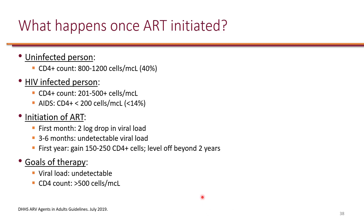Let's look at what happens when we initiate ART. In an uninfected person without HIV, a normal CD4 count is usually around 800 to 1,200 cells per microliter or more. In HIV-infected patients, the CD4 count starts to drop — for most patients it falls to about 200 to 500, and once it drops below 200, the patient has AIDS.